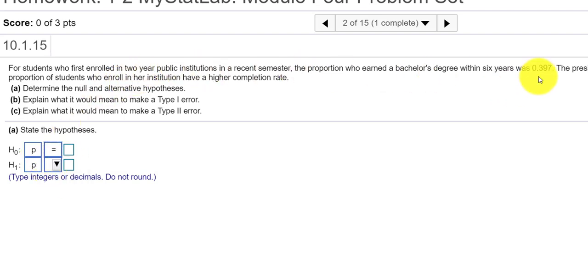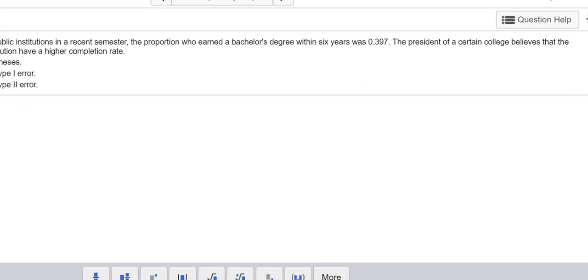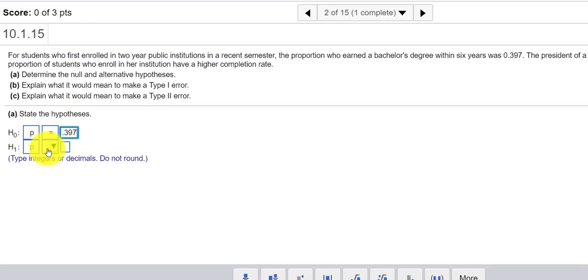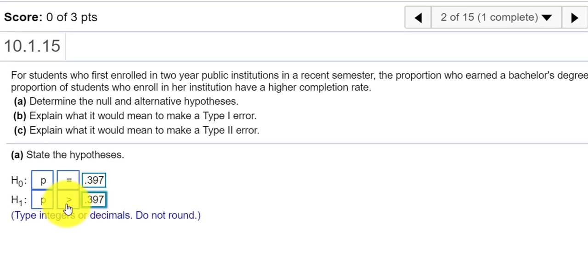And what do we have? The proportion is 0.397. So I'll put in 0.397. And we want to test to see if the students have a higher completion rate. So the alternative hypothesis would be the proportion's greater than 0.397. Notice how my inequality sign is pointing to the right. So that's a right-tailed test. If I had the inequality pointing to the left, this would be a left-tailed test, and of course this would be a two-tailed test.